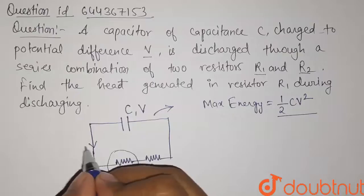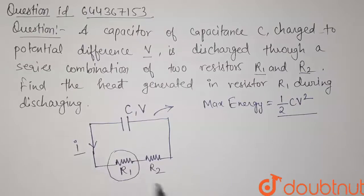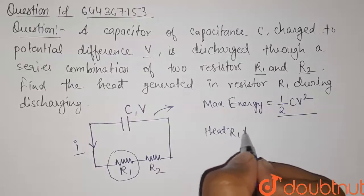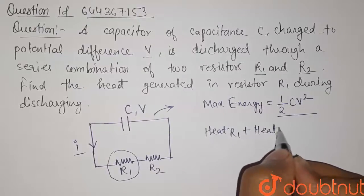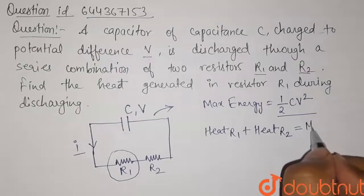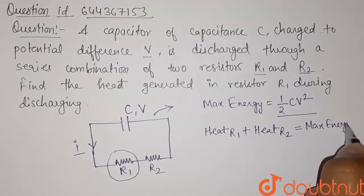So let us take the current flowing in this circuit is I. Heat through R1 plus heat generated in R2 equals this maximum energy.